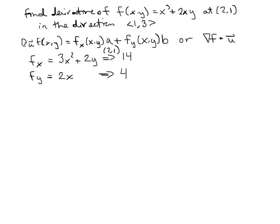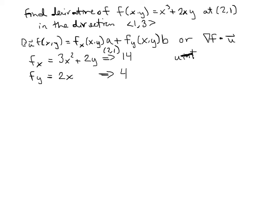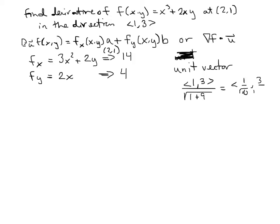Now, the direction vector (1, 3) is not a unit vector, so we need to find the unit vector. We divide (1, 3) by its own magnitude: the square root of 1² + 3² = √10. So the unit vector is (1/√10, 3/√10).